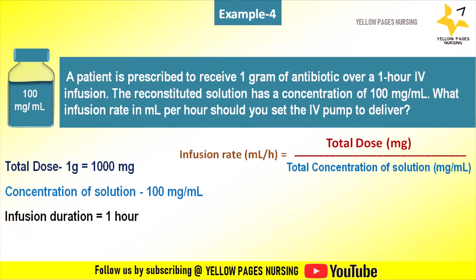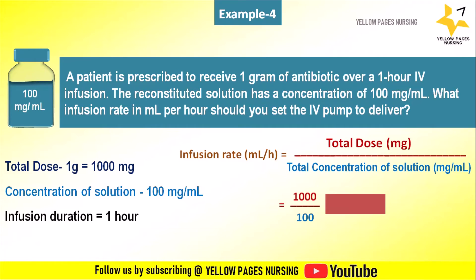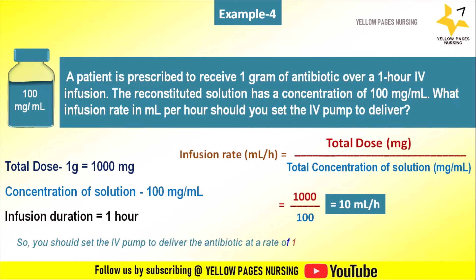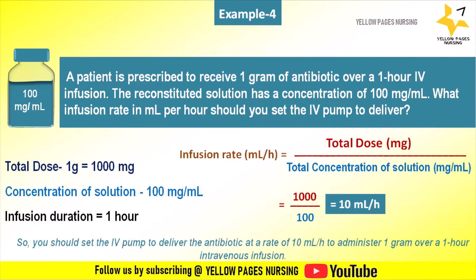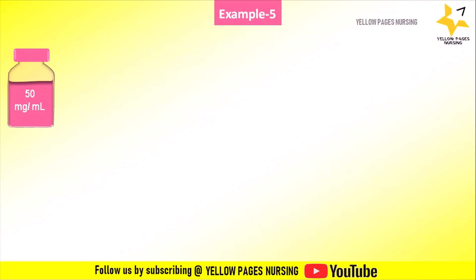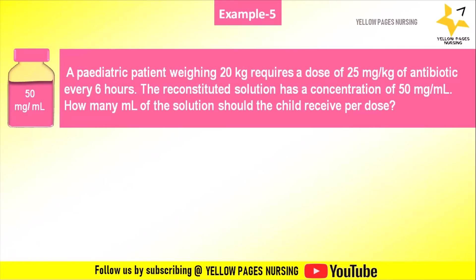Infusion duration is one hour. As per the formula, infusion rate equals total dose divided by total concentration of solution, which is 1000 divided by 100, giving the answer 10 ml per hour. So you should set the IV pump to deliver the antibiotic at a rate of 10 ml per hour to administer one gram over one hour of intravenous infusion.